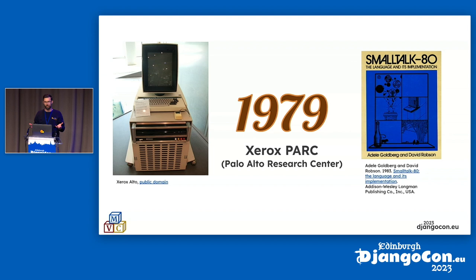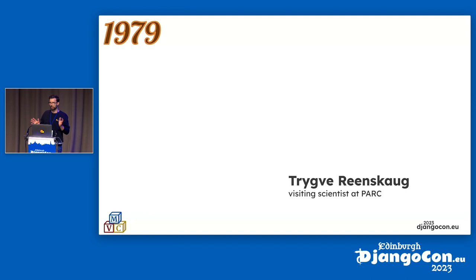Also, as part of the Smalltalk group, in 1979 there's actually a visiting scientist from Norway at PARC. His name is Trygve Reenskaug — I don't speak Norwegian, that's my best bet at how to pronounce that. He's visiting at PARC in 1979, working on Smalltalk and user interfaces, and he's the first to name the model-view-controller pattern.